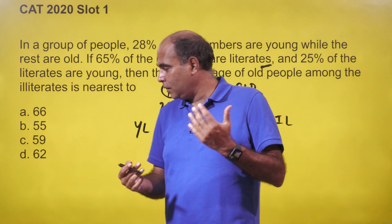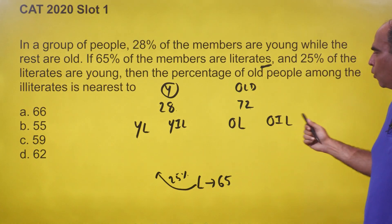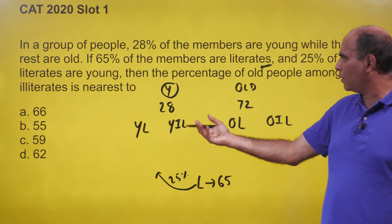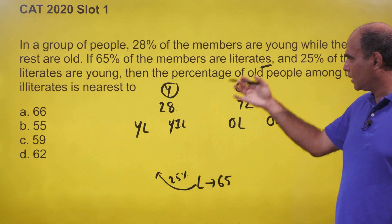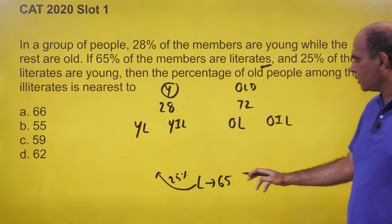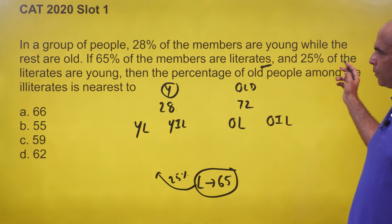Young literate, young illiterate, old literate, old illiterate. And once you have this table, this question has got nothing in it. 65 percent of members are literates, so literates are 65 percent. And 25 percent of the literates are young.